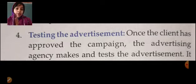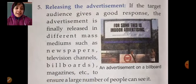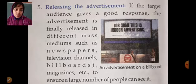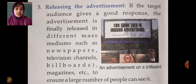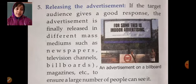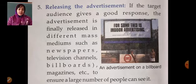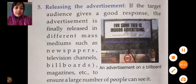First they show the advertisement to their client — whether they like it or not. Next is releasing the advertisement. If the target audience gives a good response, the advertisement is finally released in different mass media such as newspapers, billboards, and magazines. When a small group of clients approves the advertisement, they then show it to the broader public through mass media.